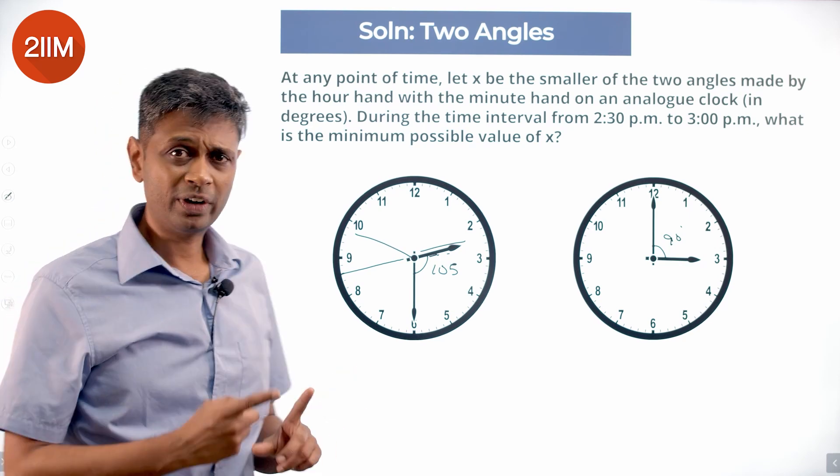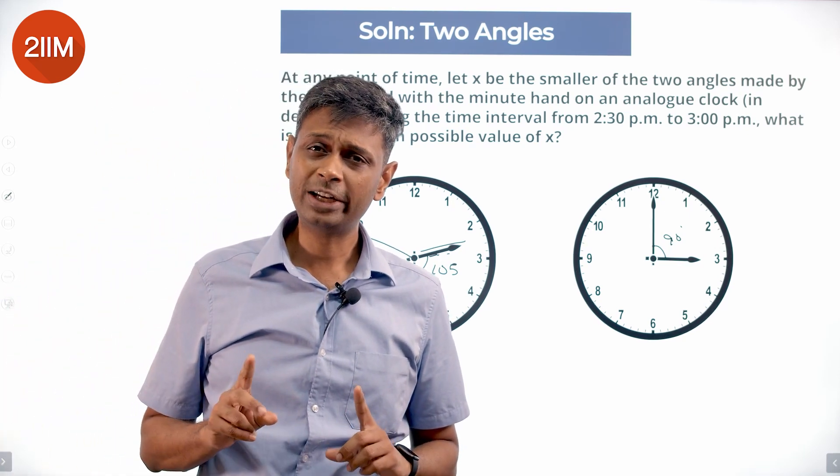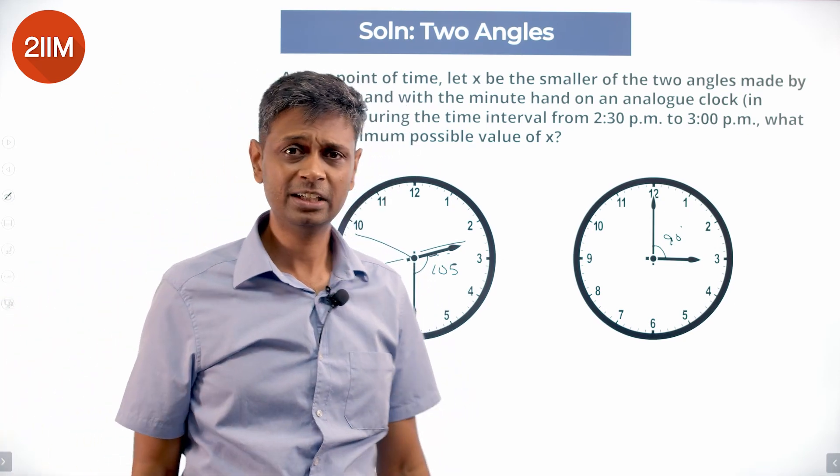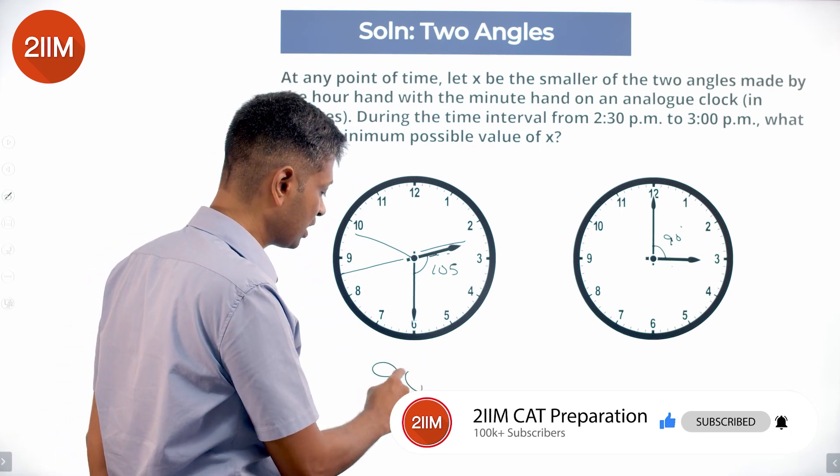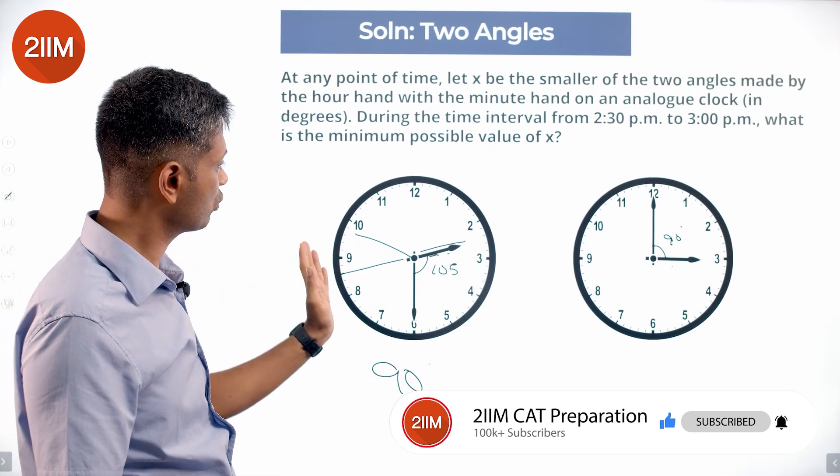So it goes from 105 all the way to 180, and then at 180 it keeps on reducing. After that it will keep on falling till it comes and collapses, when it will be smallest. At this point, what is the smallest angle? 90 degrees. The angle starts at 105, goes all the way to 180, and then goes from 180 to 90. In this journey, the smallest angle will be 90 degrees.